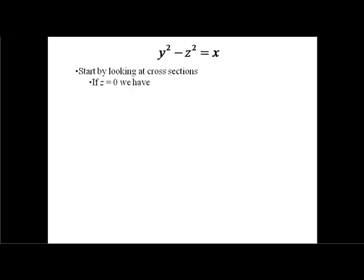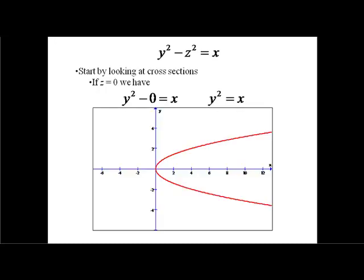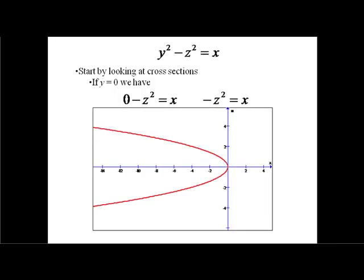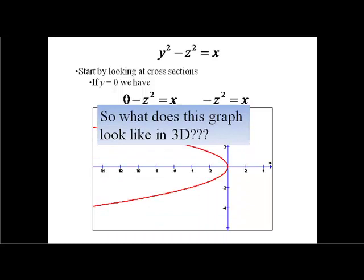So, for instance, if we let z be zero, then our graph simplifies down to x = y². So, plotting that in the xy plane, we basically get a parabola. It's going to be on its side because it's x = y². We're going to do something similar by setting y equal to zero and we get x = -z². Once again, we get a parabola. So, again, what does this graph look like in 3D? That's really the big question here.